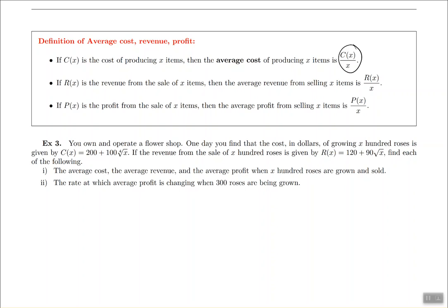Similarly, the revenue is basically the income from selling X items. The average revenue is the revenue of selling all the items divided by how many items you made. Finally, profit is the money that you get to keep. And the average profit is the profit that you made from selling X items divided by X itself.